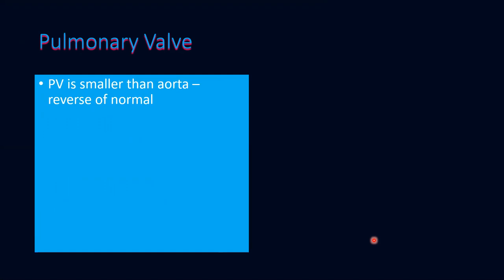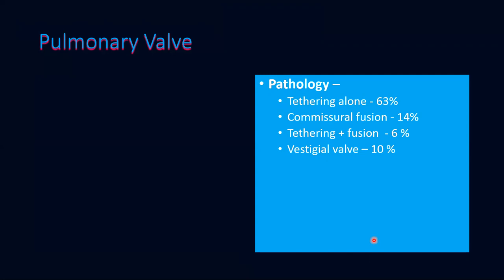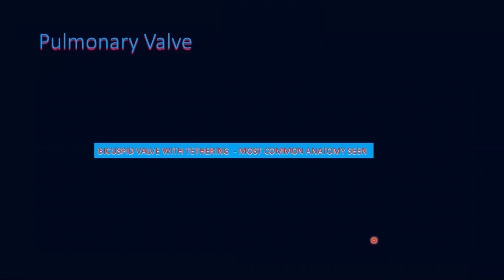Regarding the pulmonary valve anatomy: the pulmonary valve is smaller than the aorta in tetralogy — the reverse of normal. It is stenotic in 75% of cases. The bicuspid valve anatomy is the commonest, seen in 66% of cases. Tricuspid valves when seen are usually not stenotic. The next common pathology associated with stenosis is a dysplastic or vestigial valve. Valves can have tethering alone, commissural fusion, tethering and fusion, or be vestigial. Tethering is more common with bicuspid valves. The commonest pathology to remember is a bicuspid valve with tethering.